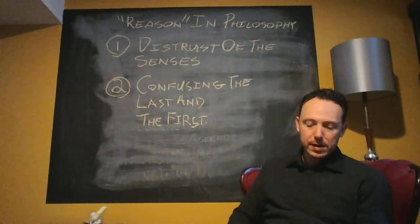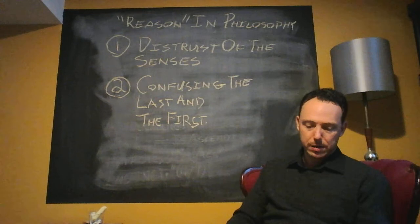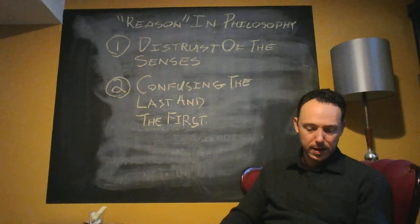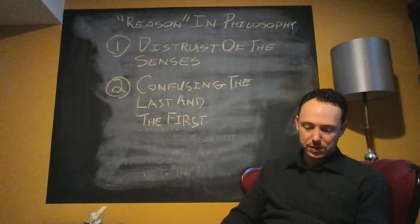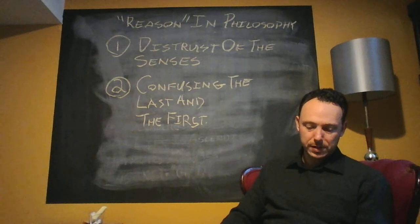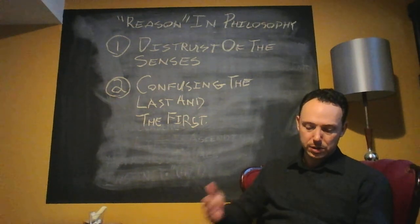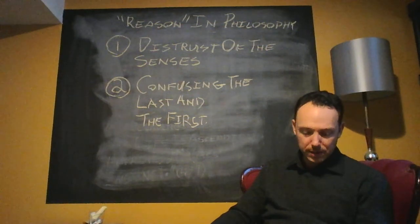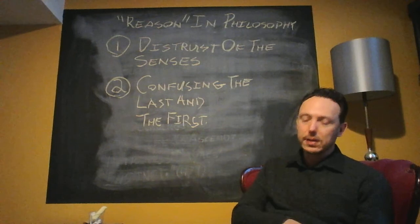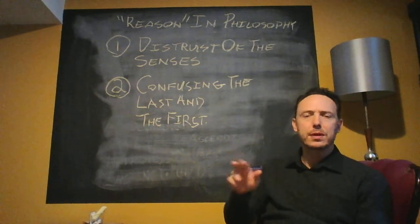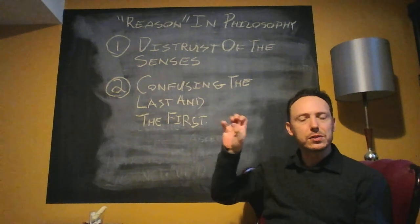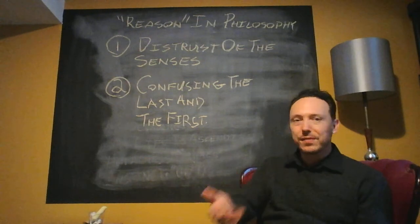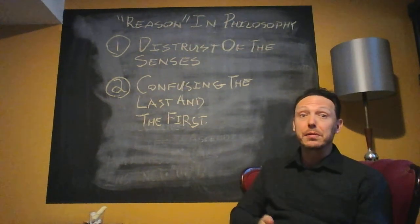What Nietzsche wants to argue is to a certain extent Heraclitus had it right. With the highest respect, I accept the name of Heraclitus. When the rest of the philosophic folk rejected the testimony of the senses because they showed a multiplicity and change, he rejected their testimony because they showed things as if they had permanence and unity. So Heraclitus provides sort of a limited exception, but remember that aspect of Heraclitus, reason and language, logos. Heraclitus, too, actually expressed sort of a fascination for reason.